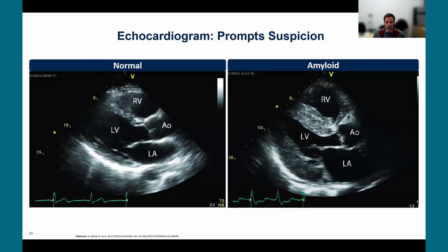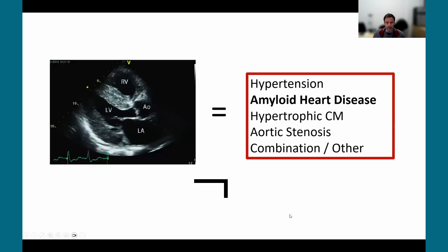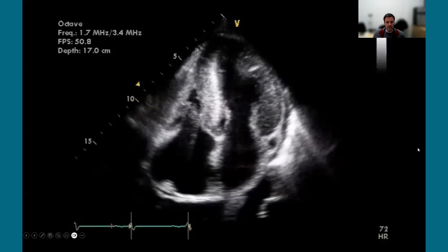By echocardiogram, the key finding to look for is thickening of the heart. The differential diagnosis includes hypertensive heart disease, hypertrophic cardiomyopathy, aortic stenosis, and many other conditions, but amyloid heart disease should be within your list of differential diagnoses.